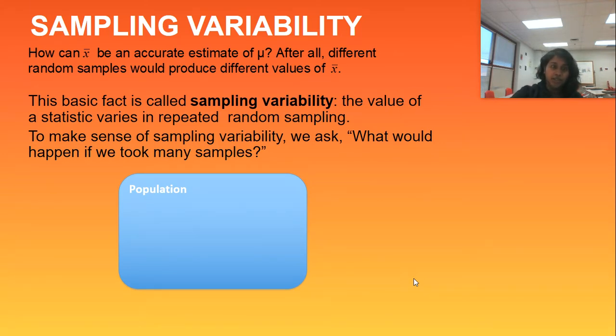So how can X bar or sample mean be an accurate estimate of population mean? That's what that first section is saying. After all, different random samples would produce different values of X bar. So how can I take a sample, look at its mean, and use this as an inference back to the population when every sample can be produced differently?